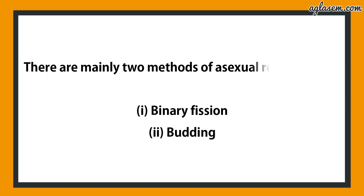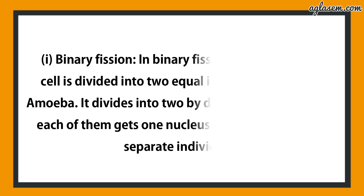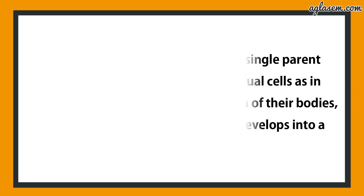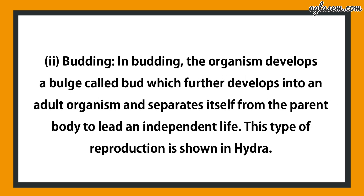There are mainly two methods of asexual reproduction: first is binary fission, second is budding. In binary fission, a single parent cell is divided into two equal individual cells, as in amoeba — it divides into two by division of their bodies, and each gets one nucleus and develops into a separate individual. In budding, the organism develops a bulge called a bud, which further develops into an adult organism and separates itself from the parent body to lead an independent life. This type is shown in hydra.